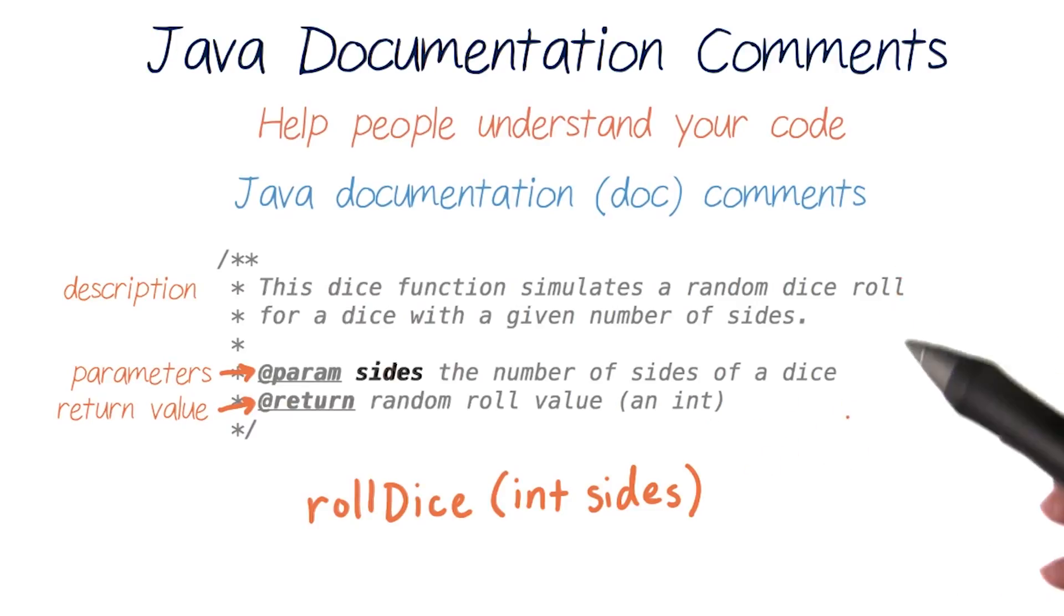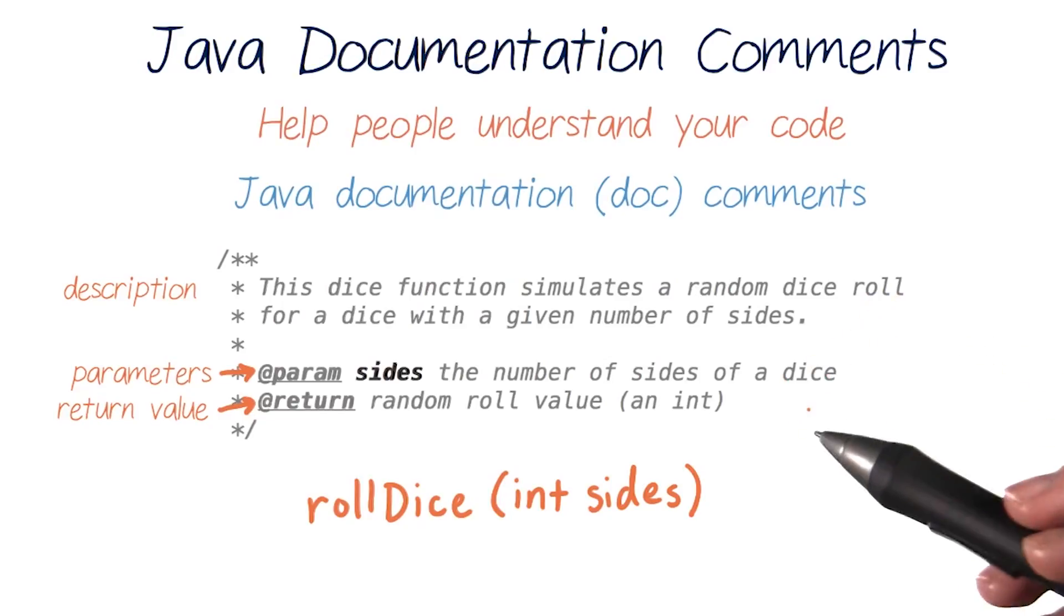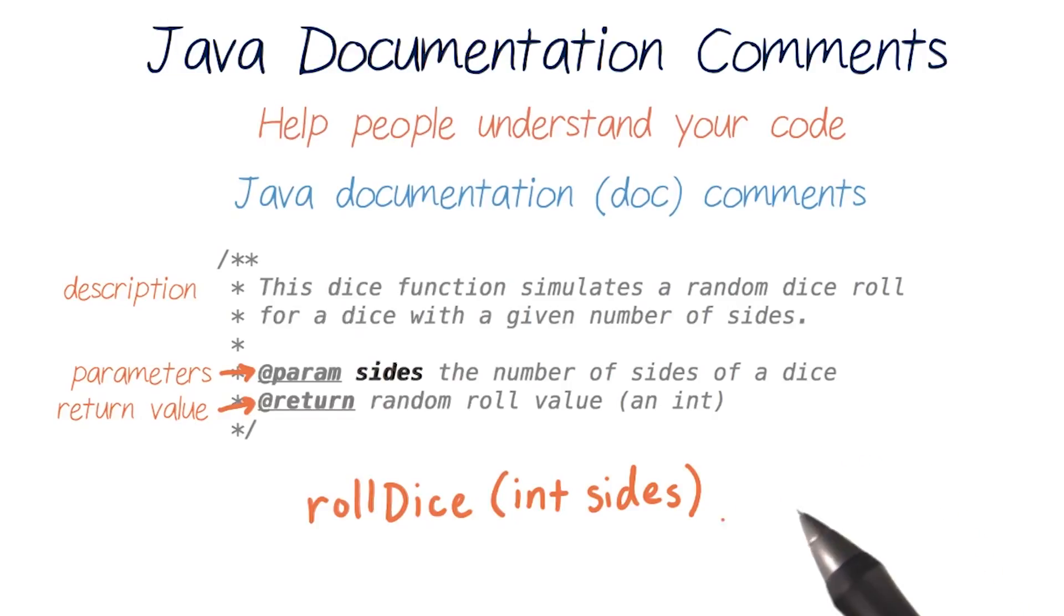And when you write JavaDoc comments like this, there's even software that will automatically generate documentation that looks like what we saw for Math.random and Math.max. So if you want to write your own Java documentation, it's as easy as including it in your code comments.